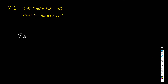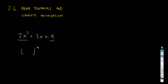Suppose I give you the trinomial 2x squared plus 3x plus 4 and instruct you to factorize it. First, you could check if it's a perfect square trinomial — it's not going to work, because 4 is the square of 2, but this other term is not the square of anything with an integer coefficient. We cannot find an integer coefficient such that squaring it gives 2x squared, so this is not a perfect square trinomial.